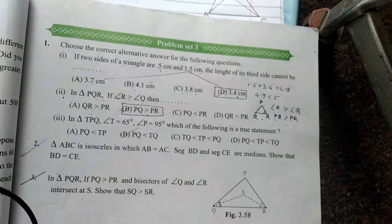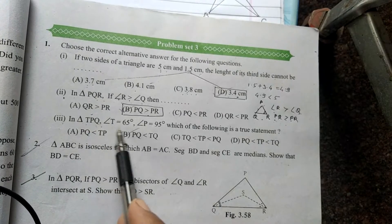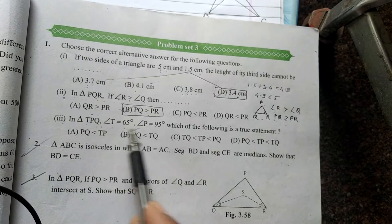Then third example: In triangle TPQ, angle T equals 65 degrees, angle...